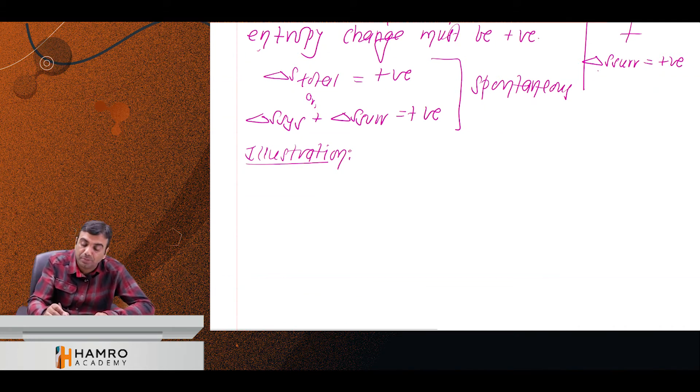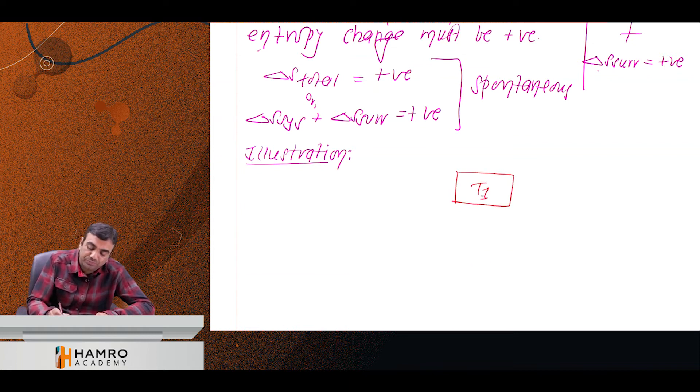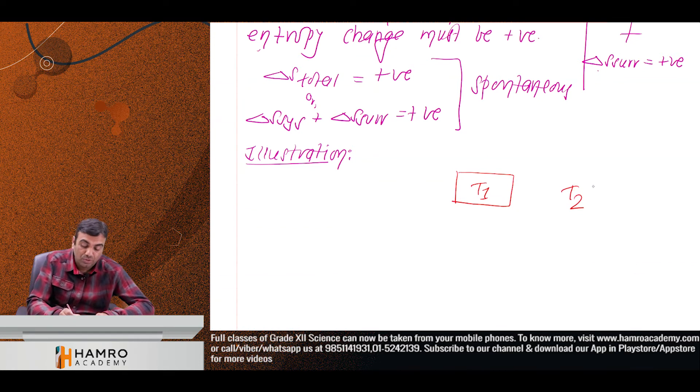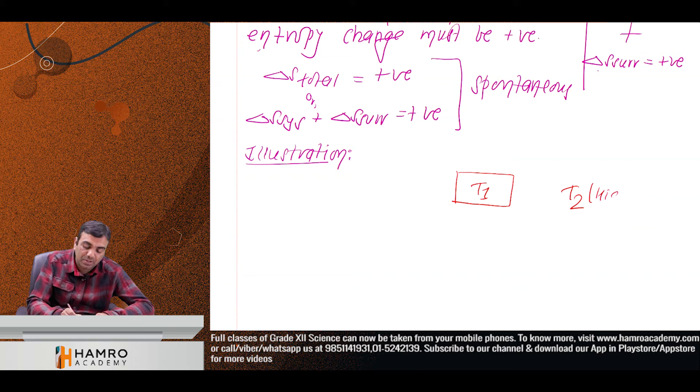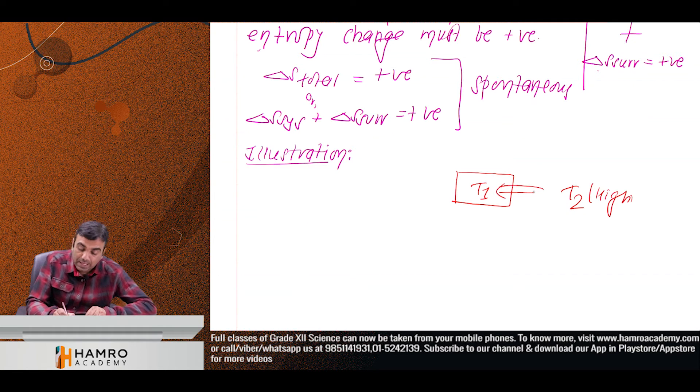Condition. System. Temperature T1, surrounding temperature T2. Temperature high. Q amount of heat loss. Surrounding.